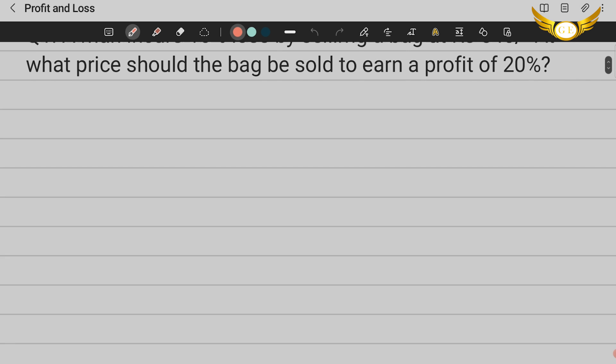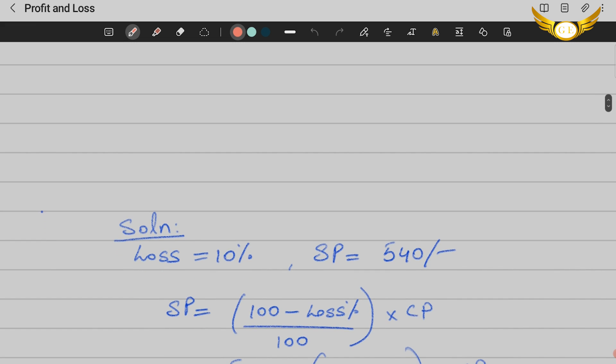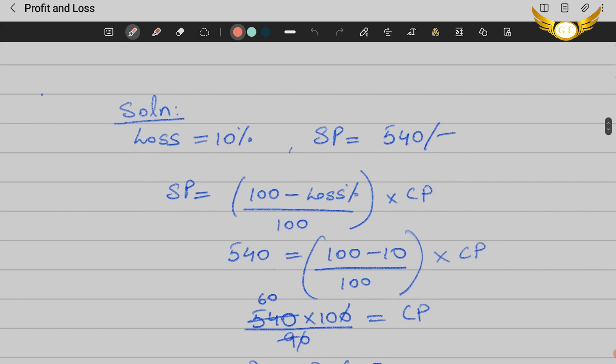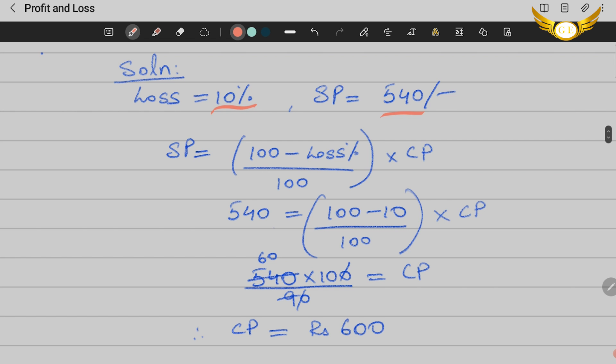I've already solved this for you. What we are given is that the loss is 10% and the selling price is 540. The formula is: selling price equals 100 minus loss percent by 100 into CP. Please make a note of it.